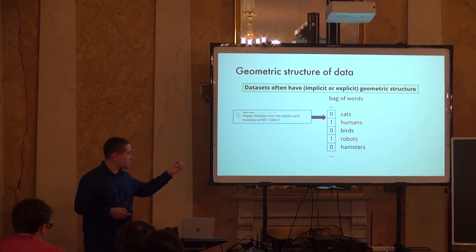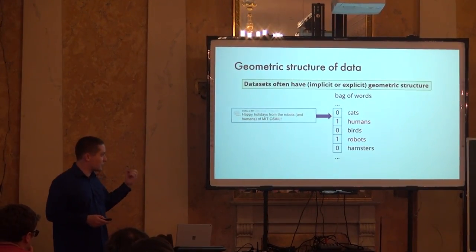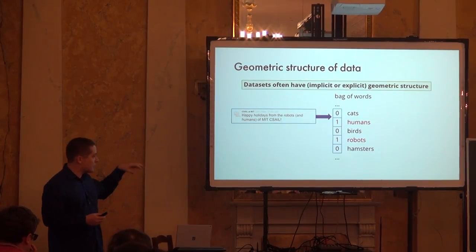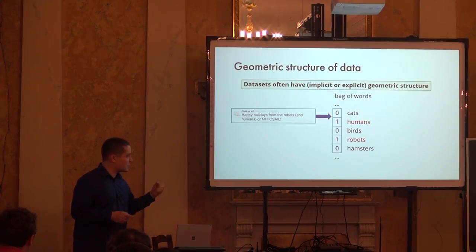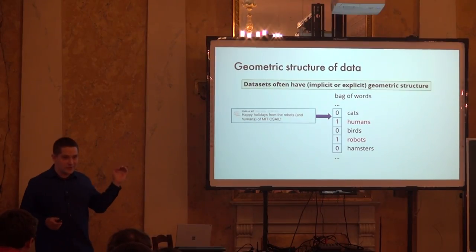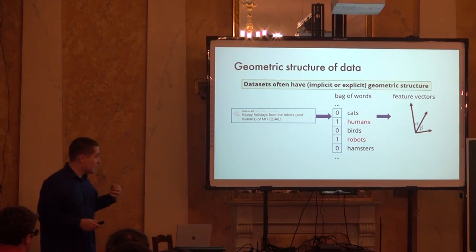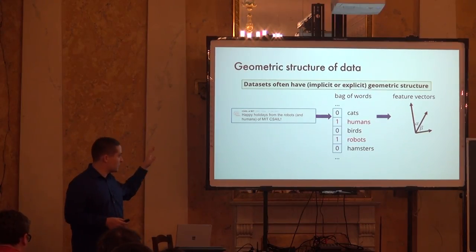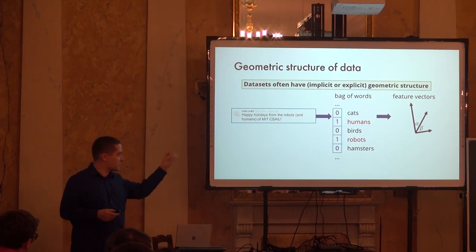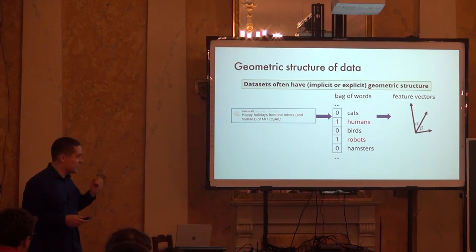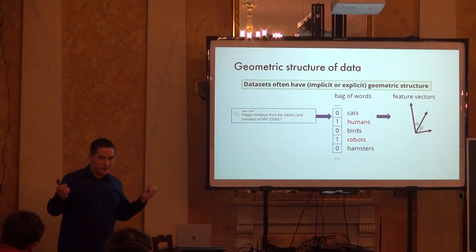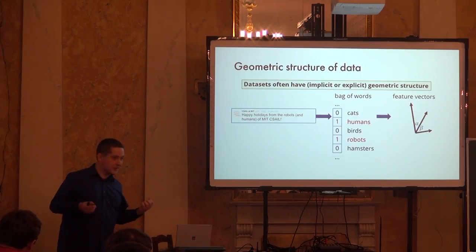One simple construction you can use is called bag of words. You have a coordinate for every possible word, and the value of a given coordinate is how many times that word occurs in a tweet or any other text document. This allows you to stop thinking about tweets and start thinking about feature vectors in a vector space — usually called feature space. For instance, if you want to understand how similar two tweets are, you can look at two corresponding vectors and compute the angle between them as a similarity measure.